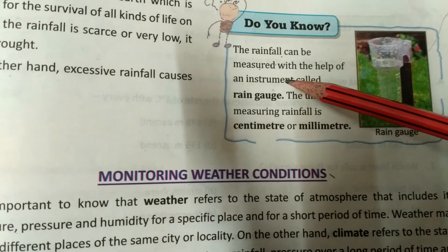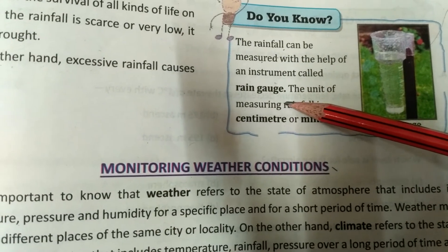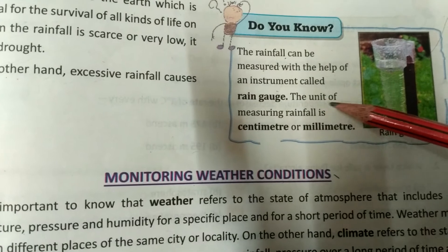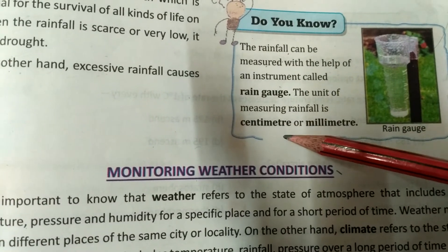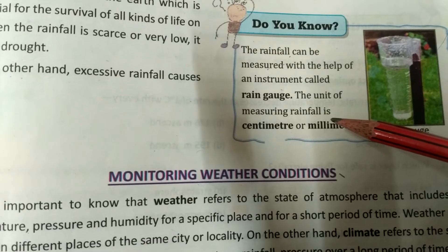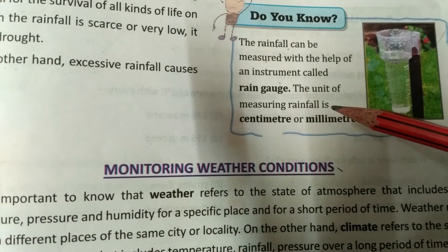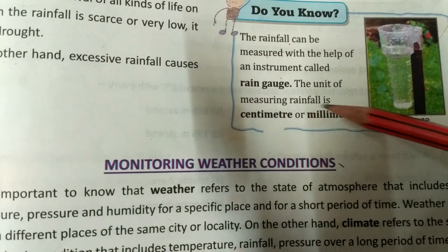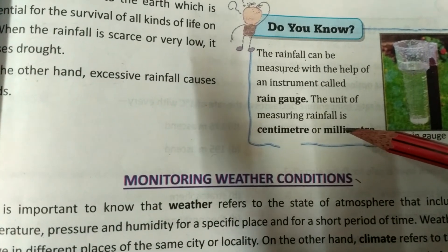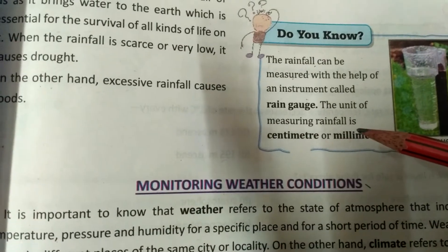Rainfall can be measured with the help of an instrument called a rain gauge. Look at the instrument — the rain gauge. The unit for measuring rainfall is centimeters or millimeters. This is how we measure how much rainfall occurs in a particular place.